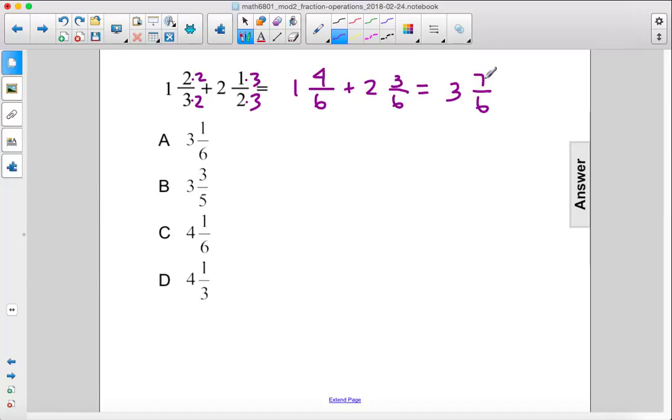This can be simplified further because seven is greater than six, so let's break it into two parts. Seven over six can also be written as six over six plus one over six.